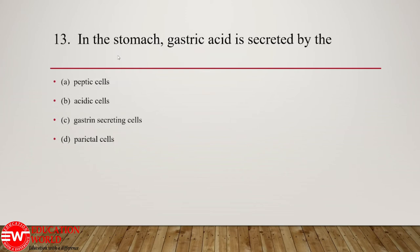Question number 13: in the stomach, gastric acid is secreted by — we know that in the stomach, gastric acid is primarily secreted by the parietal cells. The parietal cells are present in the gastric glands and they secrete the acid. Peptic cells secrete pepsin; gastric secreting cells secrete gastrin; and parietal cells are responsible for secretion of gastric acid.